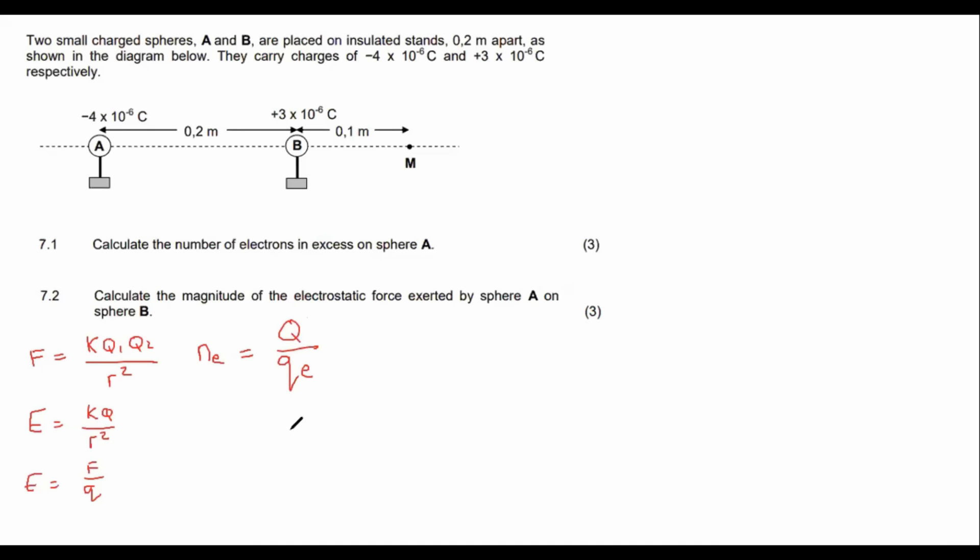And then we also need to remember our conversions, you know, when they give you like a milli or a micro nano pico, you need to remember all of these little conversions. I haven't written this very neatly. It looks confusing times 10 to the minus three times 10 to the minus six. And then K of course is a constant of nine times 10 to the nine. That's pretty much the summary of the different formulas that we use.